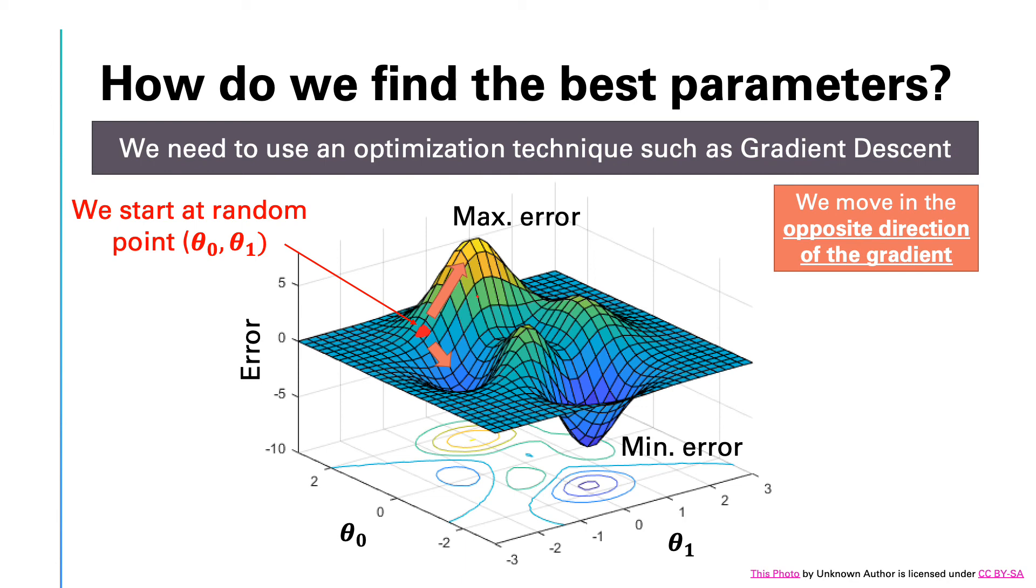The good news is that if you have a convex function, then you can always use gradient descent with no problem. If you have a function like this one, then there are methods to deal with this problem. For example, you can start at multiple different random starting points and see which one gives you the lowest point.